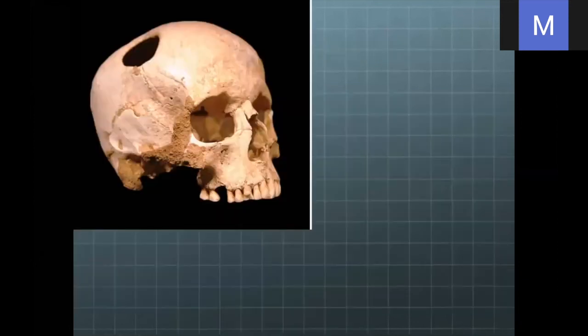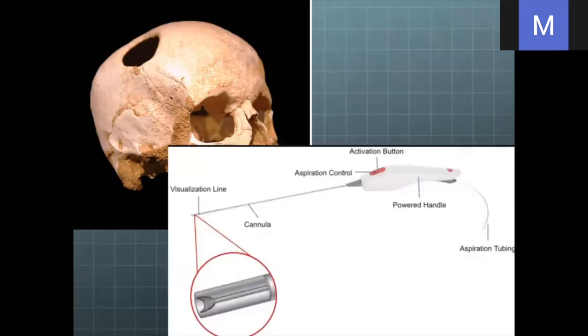Trepanning — putting holes in people's skulls — has been around for a long time, but we're now doing much finer surgeries with much smaller tools that cause a lot less damage to surrounding tissue. One of the tools they use can suck out clots; they can actually inject saline or inject thrombolytics through this to break up the clot and then suck it out. They can do this under CT guidance in the OR, getting to very specific areas without causing much damage to surrounding tissues.